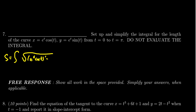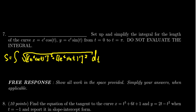We square that derivative. We also take the derivative of y — e to the t sine of t — and square it. This all sits inside the square root. We're going to integrate with respect to t, and the bounds are 0 to pi.